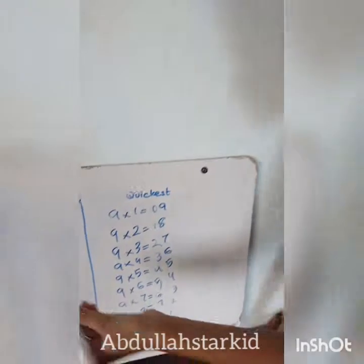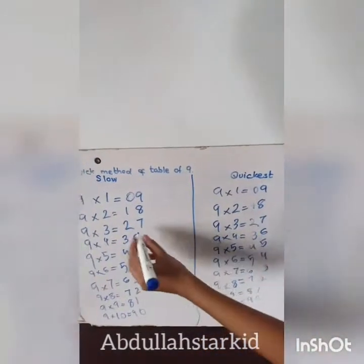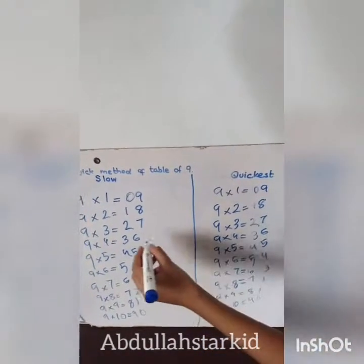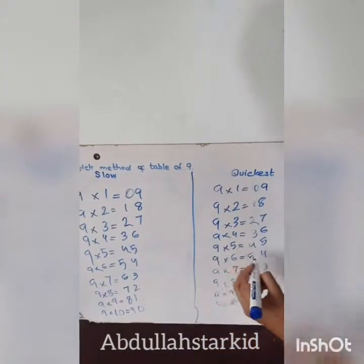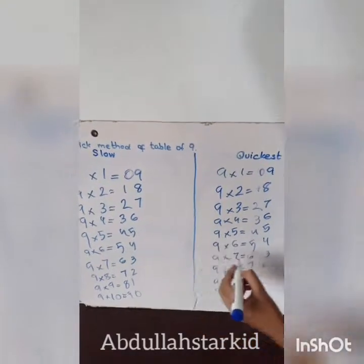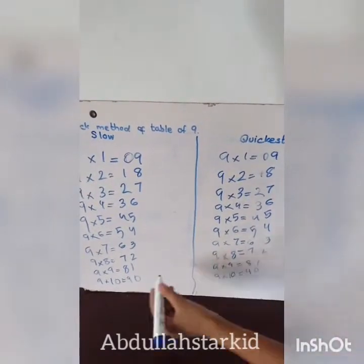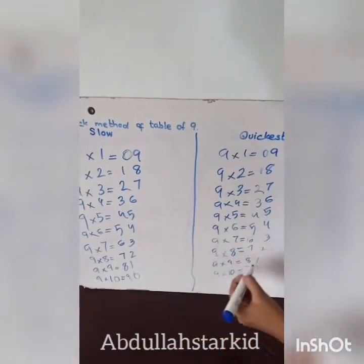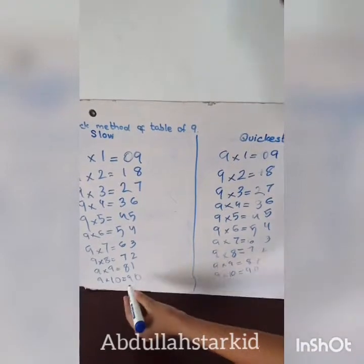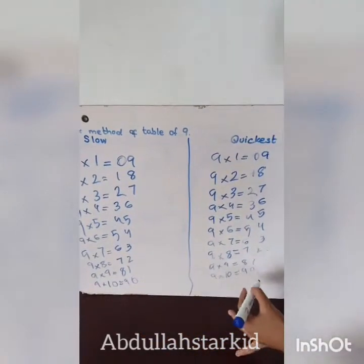See? They match! Nine, 18, 27, 36, 45, 54, 63, 72, 81, and finally 90. The pattern works perfectly — combine the forward column with the backward column and you get the entire nine times table instantly.